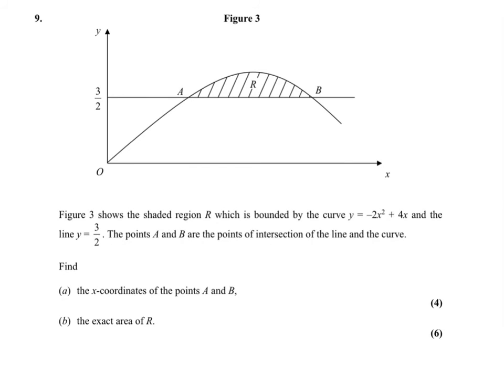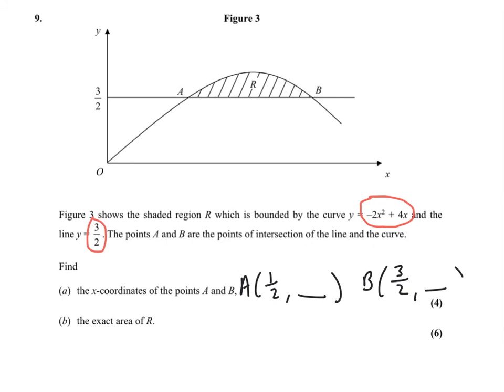Question 9: figure 3 shows the shaded region R, bounded by the curve and the line y = 3/2. Points A and B are the intersections of the line and the curve. To find the x-coordinates of A and B, set the curve equal to 3/2 and solve. You end up with A being at x = 1/2 and B being at x = 3/2. You don't need the y-coordinates.